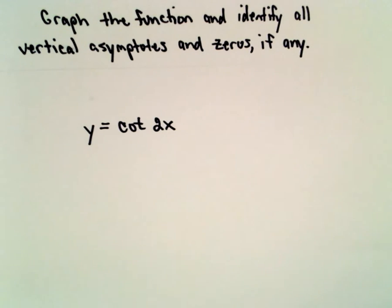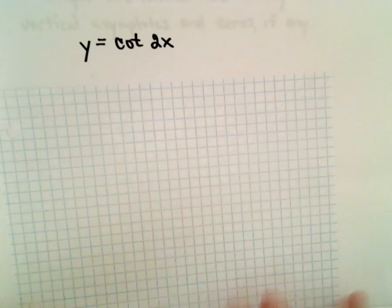Okay, here I'm going to graph the function cotangent of 2x, and also we'll pick out any vertical asymptotes and zeros.